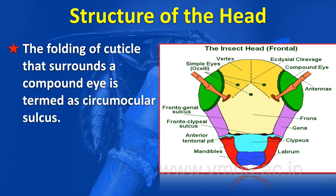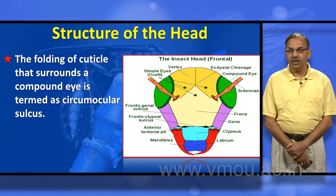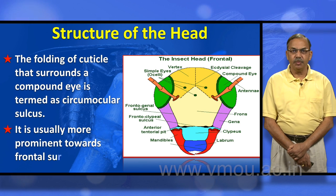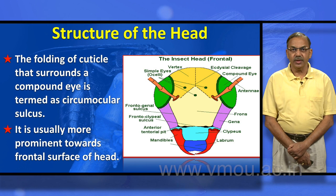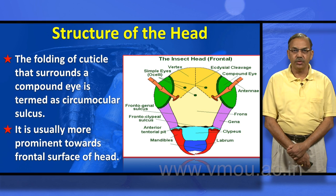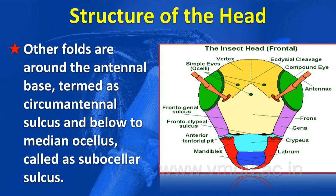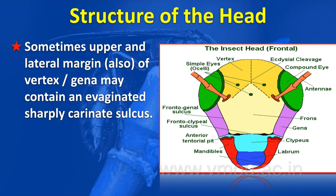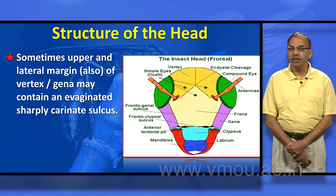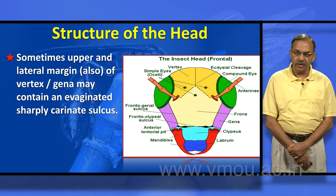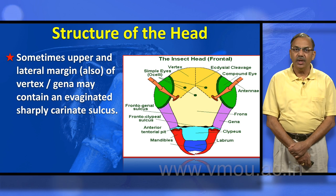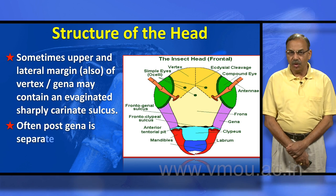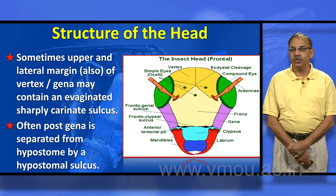The folding of cuticle that surrounds a compound eye is termed the circumocular sulcus — more prominent toward the frontal surface and less so on the posterior surface. Other folds include the circumantennal sulcus around the antennal base and the subocellar sulcus below the median ocellus. Sometimes the upper and lateral margins of the vertex may contain an evaginated, sharply carinate sulcus. Post-gena is also often separated from the hypostome by a hypostomal sulcus.